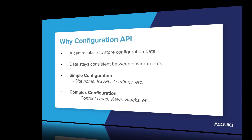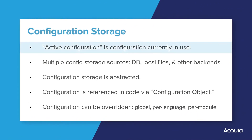With Drupal, the configuration that is currently in use for a site is known as the active configuration, and it consists of multiple storage sources. The default storage is the database, but the active configuration itself is configurable. You can store configuration in a particular directory, in other storage backends, and in the database, of course.